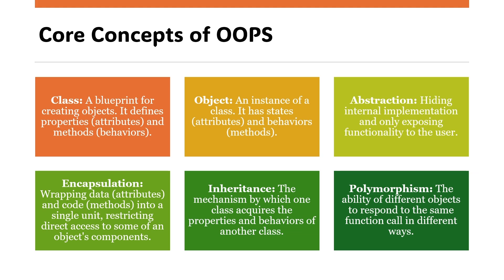The third concept is abstraction. Abstraction is nothing but hiding internal implementation and only exposing functionality to the user. The fourth is encapsulation — encapsulation is nothing but wrapping data and code into a single unit, restricting direct access to some of an object's components.